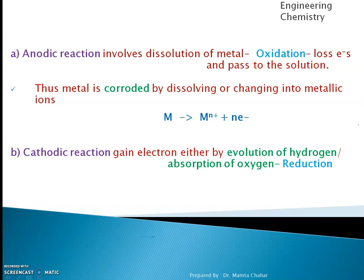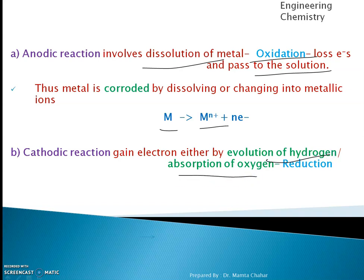At the anode, oxidation occurs — metal dissolution takes place and metal ions go into solution. At the cathode, electrons are gained, either through hydrogen evolution or oxygen absorption.